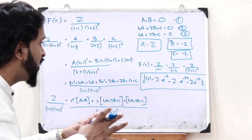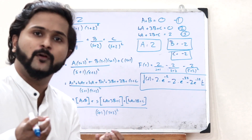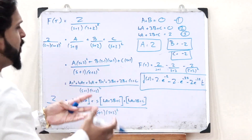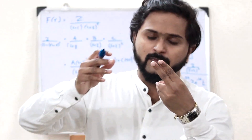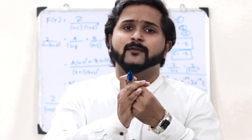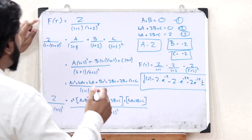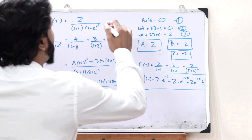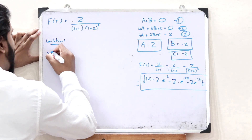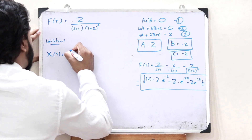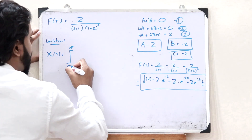If this is a unilateral Laplace transform, we simply multiply the result by u(t). There are two types of Laplace transform: unilateral and bilateral. A unilateral Laplace transform is defined as the integral from 0 to infinity of x(t)·e^(−st) dt.